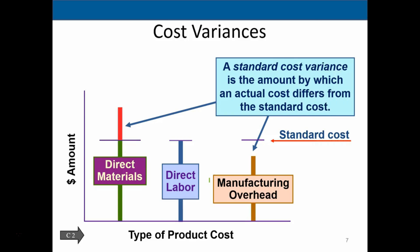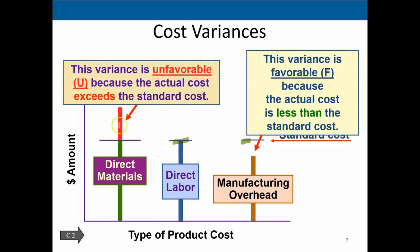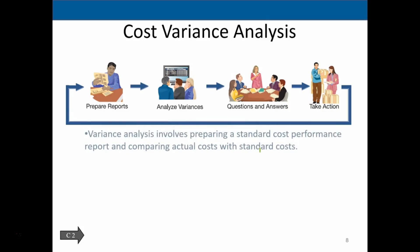A standard cost variance is the amount by which an actual cost differs from the standard cost. Looking at a graphic illustration for direct materials, direct labor, and manufacturing overhead, when the actual cost exceeds the standard cost, the variance is unfavorable. When actual cost exactly meets the standard, there is no variance — though that almost never happens. When actual cost is less than standard, the variance is favorable, since lower costs are better.